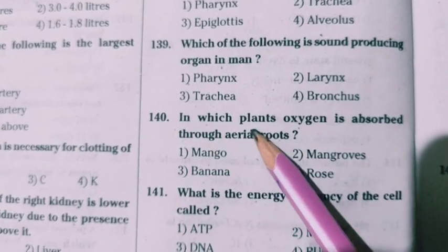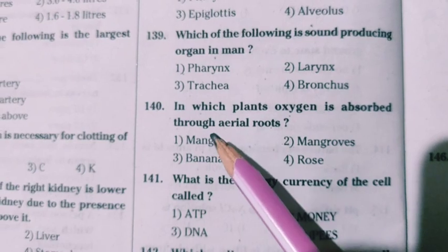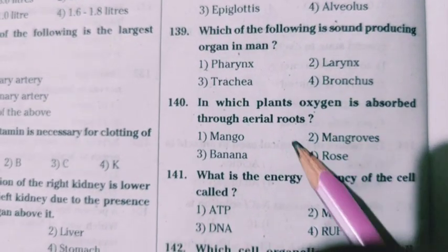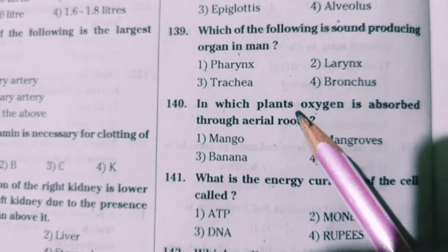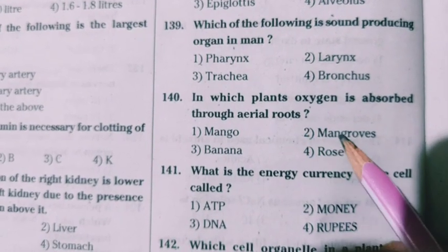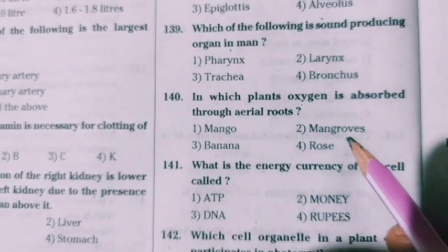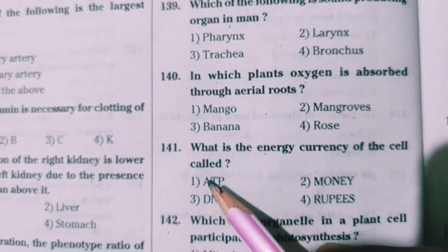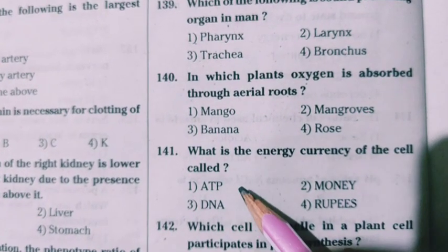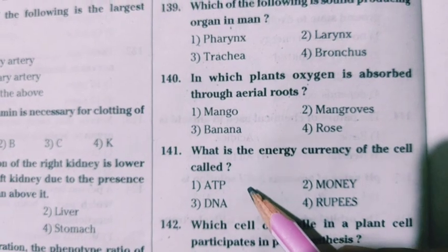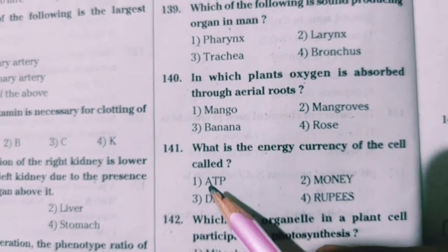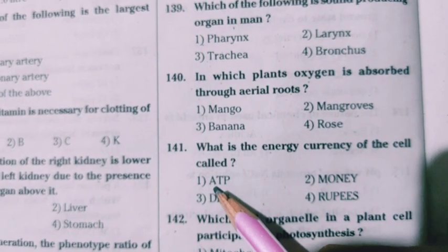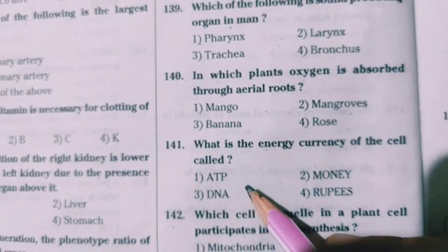In which plants is oxygen absorbed through aerial roots? The roots which are present outside in the air are found in mangroves. What is the energy currency of the cell called? ATP is the energy currency of the cell. The full form of ATP is adenosine triphosphate.